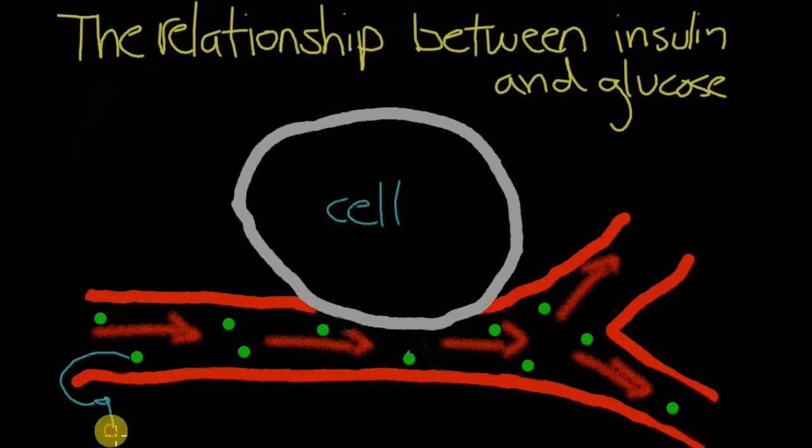So right here we have glucose and glucose will be represented by the color green. And what glucose does is that it tries to get in the cell but it gets bounced off because there's no insulin to let it pass through.